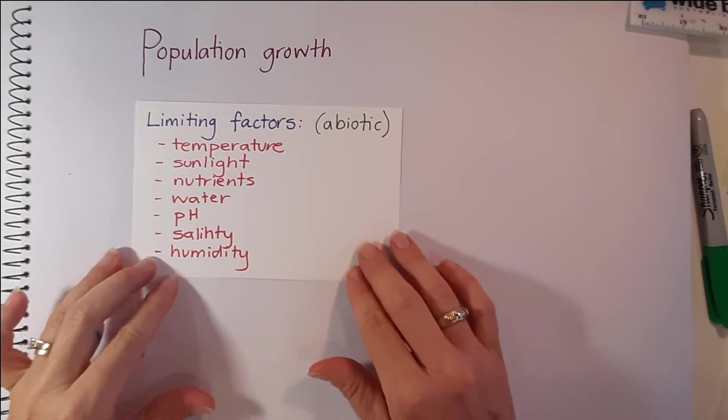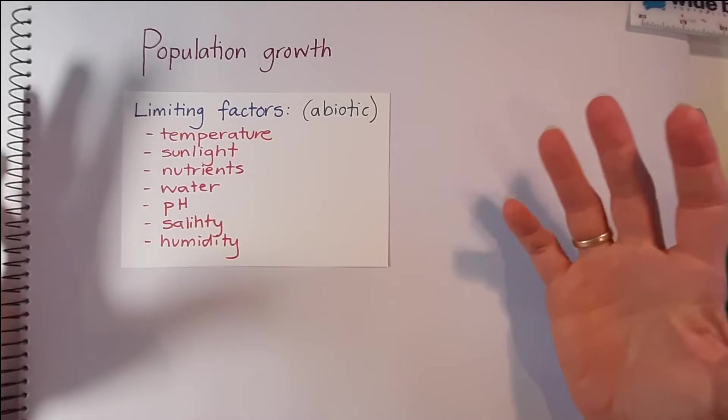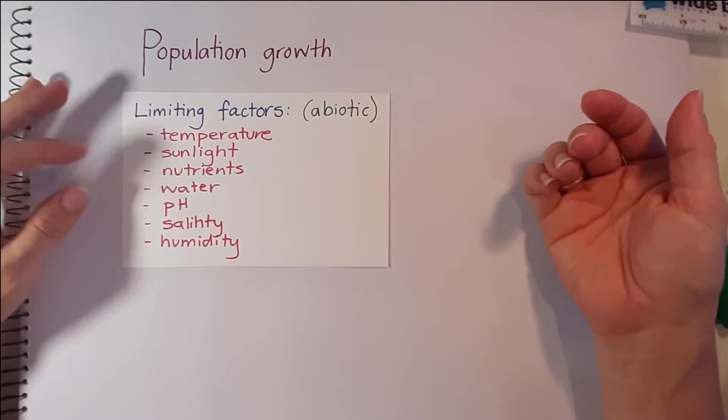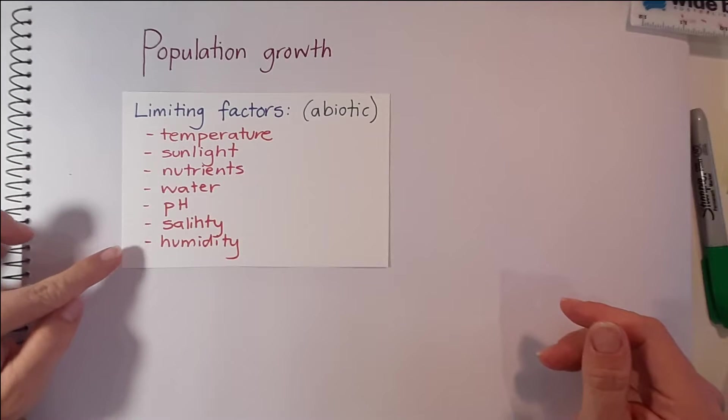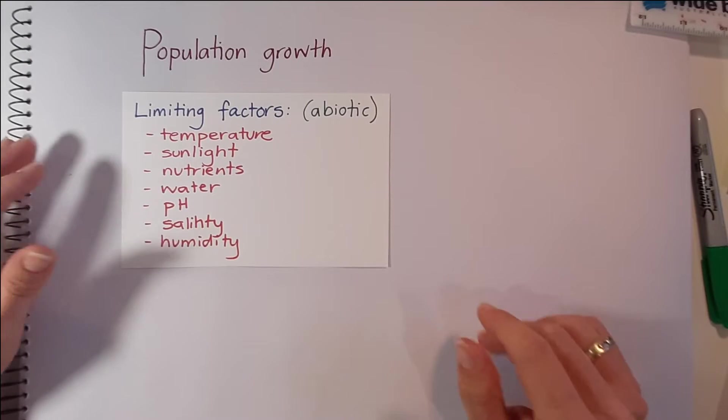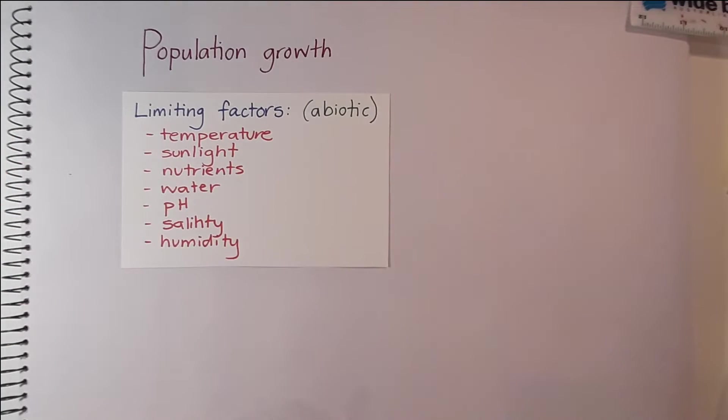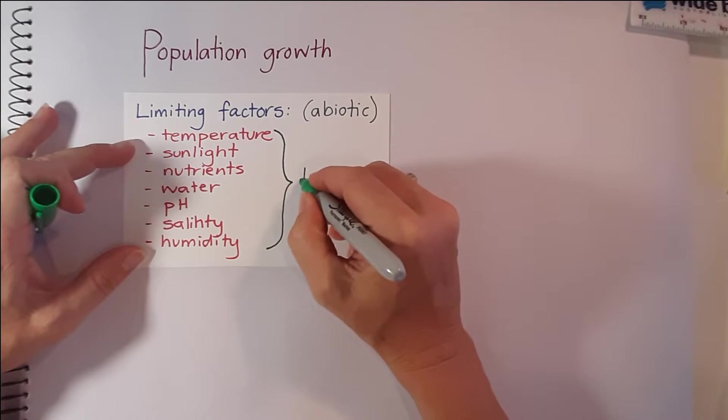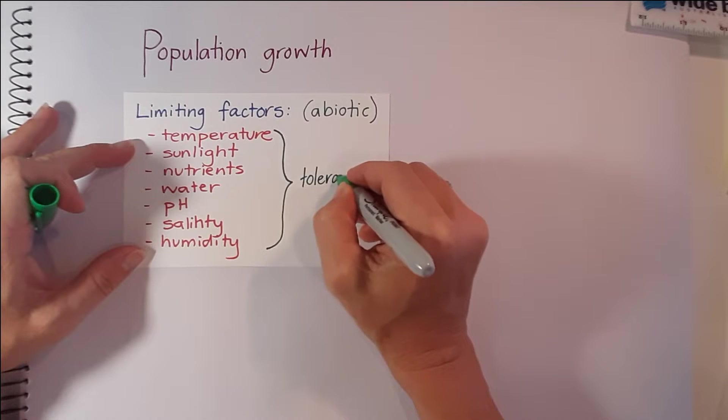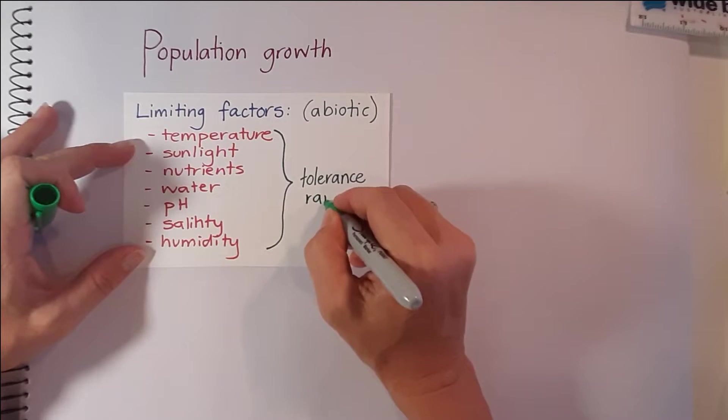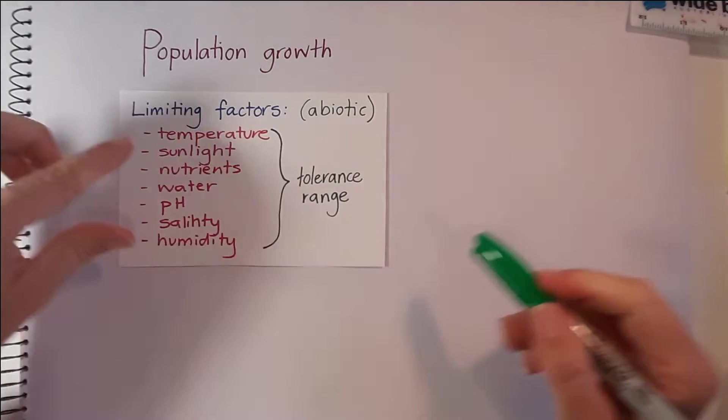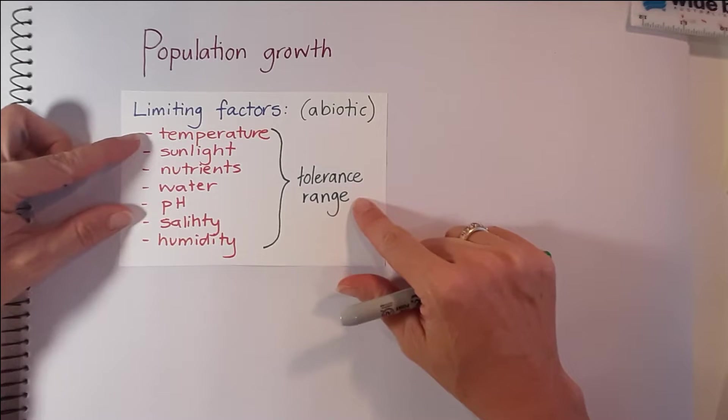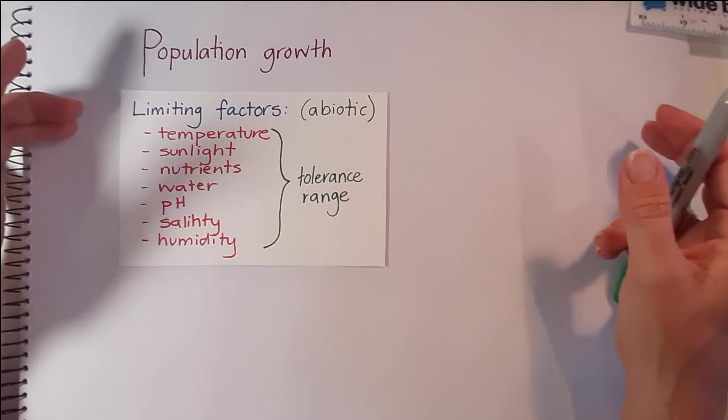All organisms have a range of limiting factors that affect their survival, so the particular abiotic factors are things like temperature, sunlight, nutrients, water, pH, salinity and humidity. If an organism is living outside its tolerance range and it will have a particular range which is suitable, then it won't be able to survive. So if we have an organism that's living in very high temperatures, it will die if it's outside its tolerance range and that's going to have a consequence on population size.